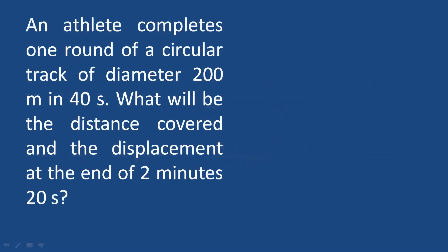Here is the question: An athlete completes one round of a circular track of diameter 200 meters in 40 seconds. What will be the distance covered and the displacement at the end of 2 minutes and 20 seconds?